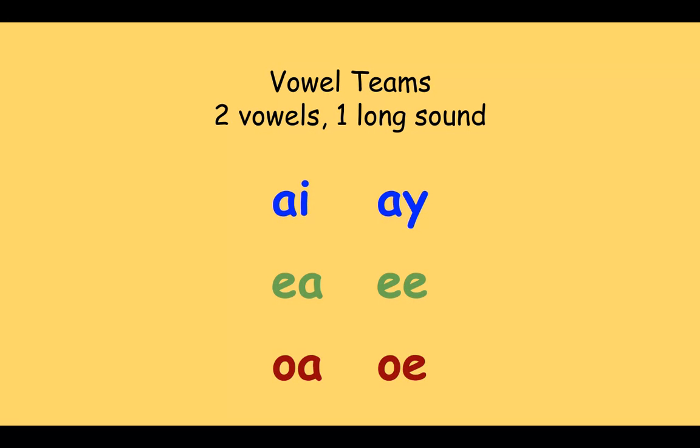AI and AY say A. EA and EE make the long vowel sound of E. OA and OE make the long vowel sound of O. Now today we're going to focus on the vowel teams A and the vowel teams O.